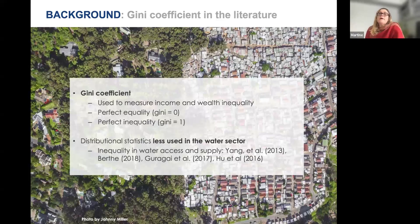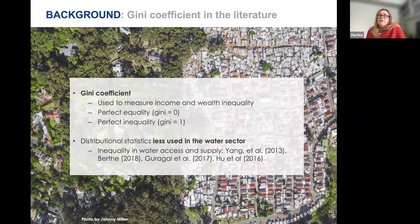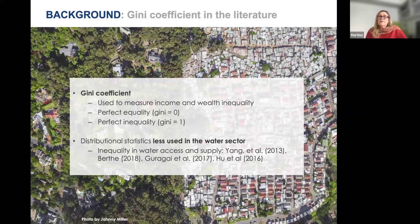The Gini coefficient is used in economics to look at differences in wealth distributions within populations, typically measuring income and wealth inequality. Perfect equality is when the Gini equals zero; perfect inequality is when it equals one. In the water sector, distributional statistics have been used less often — typically for inequality regarding water access and water supply rather than water consumption, which is our focus. Studies by Yang et al., Bertha, Guragai, and Hu et al. have looked at distributional stats, but more in water access and supply areas.